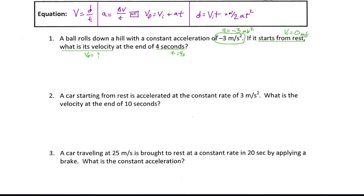Then we have the other formula which deals with distance and initial velocity — and it's important to note that the velocity in that formula is specifically an initial velocity. It also deals with acceleration and time. For this first problem, I don't know anything about distance, so I can't use that formula. Without knowing distance, and since I'm solving for final velocity, that narrows it down to the VF = VI + AT formula. I always rewrite the formula, even if it's right above, because it keeps things lined up and makes it easy to spot mistakes.